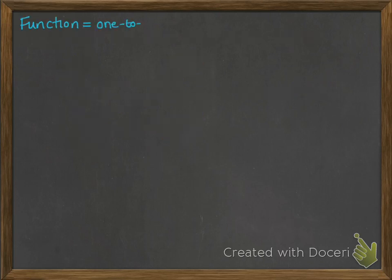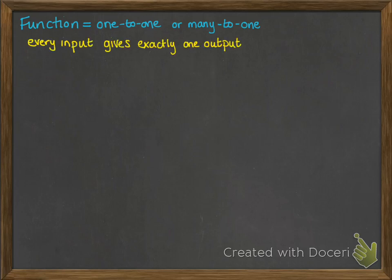Functions are a special type of mapping. They are one-to-one or many-to-one. The point of this is that every input gives exactly one output. It's the one part at the end that's important. We only have one number possible for the output that we get from it.